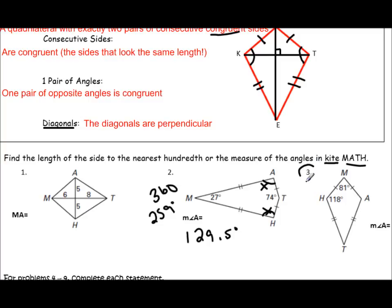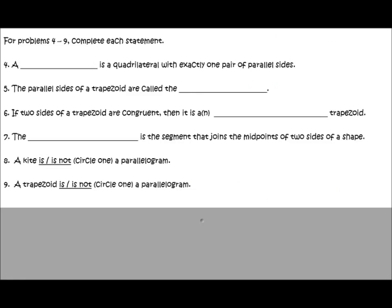I'd like for you to pause the video for number 3 and see if you get what I get. For problems 4 through 9, and the measure of angle A is congruent to H, which is 118 degrees. Problems 4 through 9 are just a review of what we've learned in the past chapter, so pause the video and see if you get what I get.